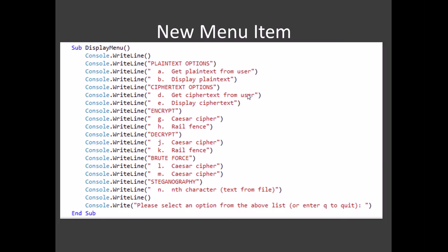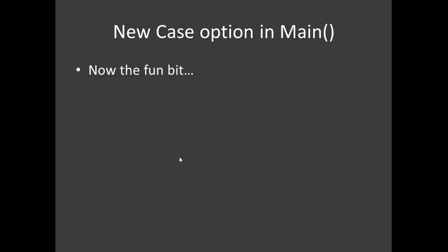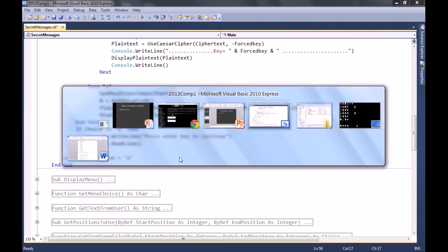I'm not going to bother showing you how to create a new main menu item, but obviously I have. I've left the Caesar cipher in there just so we can see how this brute force bit has been built up. There are obviously two spaces there between K and N — I have no idea what it will be, but this is just one possibility. Let's have a look at coding this, so we'll jump to VB.